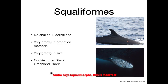The squalomorphs are a very diverse group of sharks, with huge variety in both size and feeding behaviour. Some notable examples are the Greenland shark, which I shall make a separate video for, and the cookie cutter shark, which cuts circular rings of flesh from large prey such as whales and dolphins, as seen in the upper image.